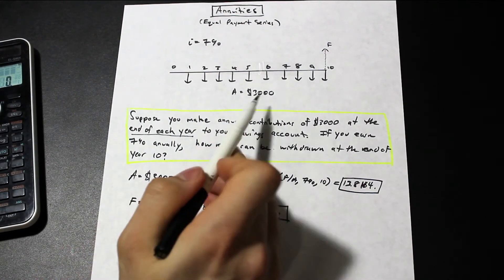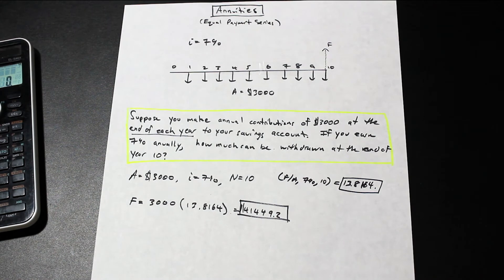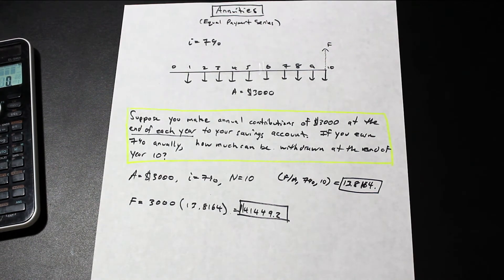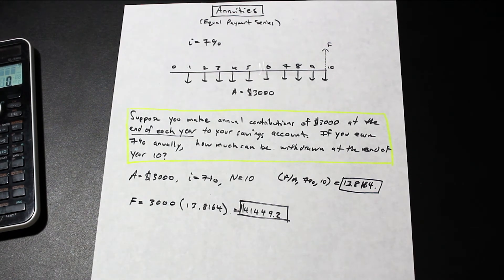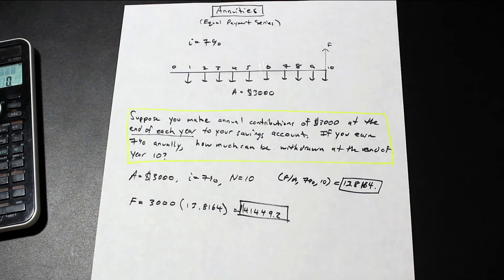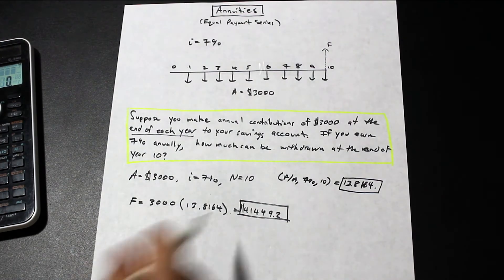So if we contribute $3,000 to this savings account, and it's compounded every year at 7% annually, what can be withdrawn at year 10? And the answer to that is $41,449.20.